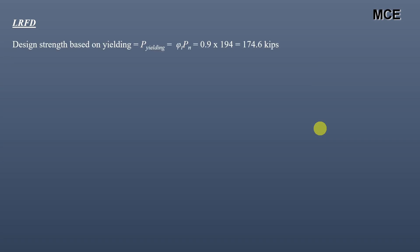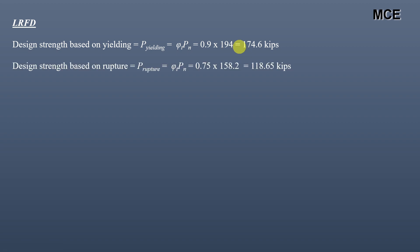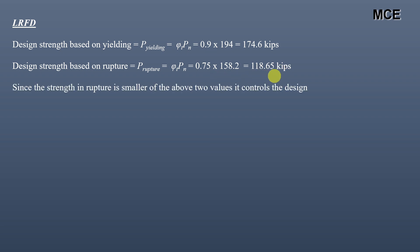For the LRFD method, the design strength based on yielding = φ × Pn(yielding) = 0.9 × 194 = 174.6 kips. The design strength based on rupture = φ × Pn(rupture) = 0.75 × 158.2 = 118.65 kips. Since the rupture strength is the smaller of the two values, it controls the design.